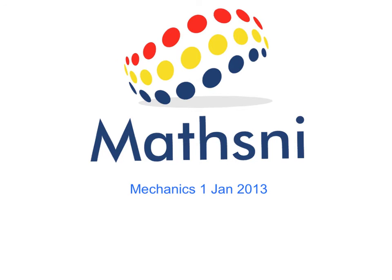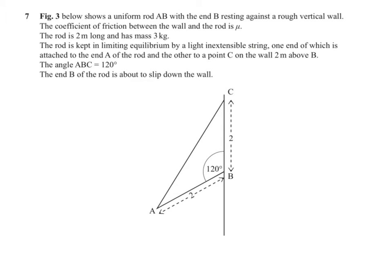I'm on January 2013. Start by reading through the question. We get the forces, so we have a uniform rod of mass 3 kilograms, that means we have to have a weight of 3g. It's resting against B, which means there must be a reaction force. B is a rough wall, that tells us there must be friction.